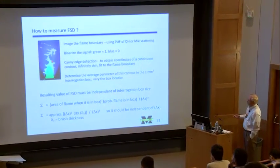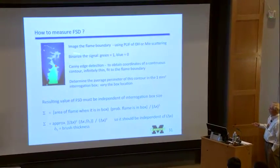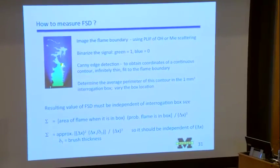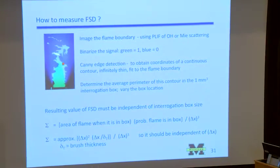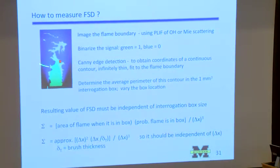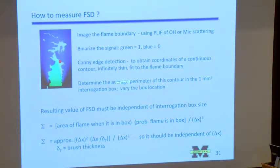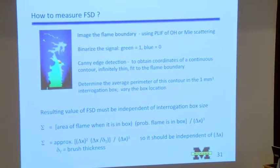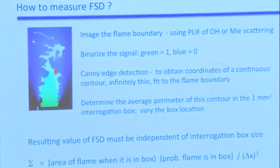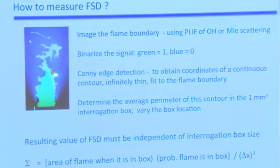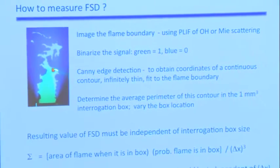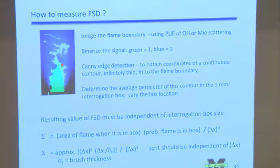Here's an image of one of our flames. In this case we use Mie scattering — we put oil drops in this flame and illuminate them with a laser, and you can see the boundary of the flame very nicely. You make a little red box to determine the edge. You take thousands of these images, determine the average perimeter when it's in the box (approximately delta x), determine the probability that it's in the box, put them together, and get the flame surface density.